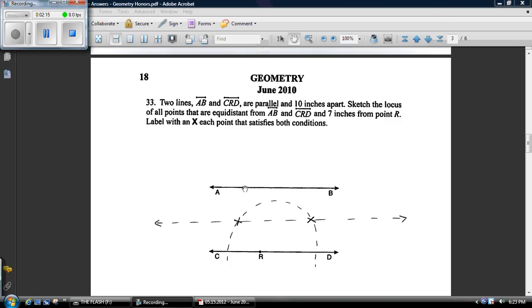33. So these two lines are parallel and they're 10 inches apart, which means directly in the middle is 5 inches. So the locus of points that are equidistant from AB and CRD, that's the line that goes directly through the middle of them. So this line is basically at 5.